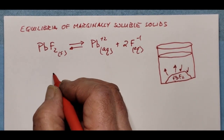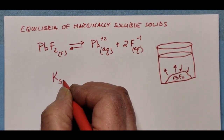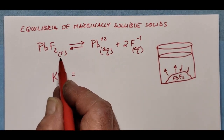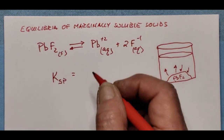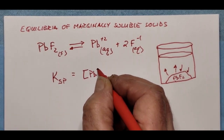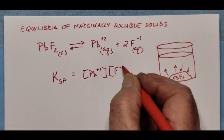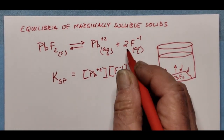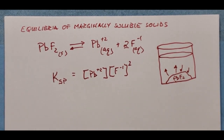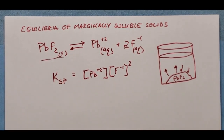The equilibrium expression, which we call the solubility product constant, is still products over reactants. But in this case the reactant is a solid, so the denominator in this equilibrium expression completely disappears and only the products appear. We still raise each product to its stoichiometric coefficient, so the fluoride concentration would be squared. The notable thing is that there's no denominator in this equilibrium expression.